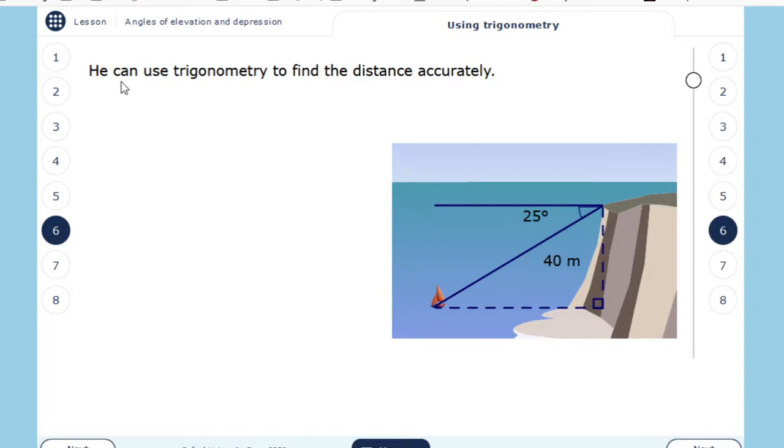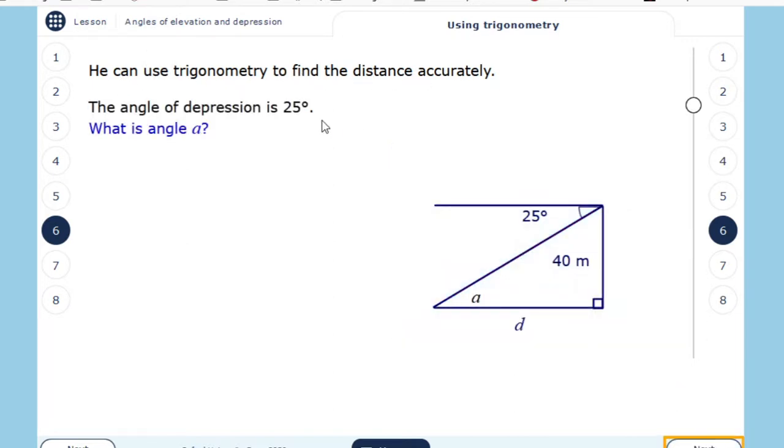This is basic trigonometry. We can use trigonometry to find the distance accurately. The angle of depression is 25. How much is the angle A here now? Because these two angles are alternate angles on parallel lines, the horizon and the bottom are parallel, so A is also 25 degrees.